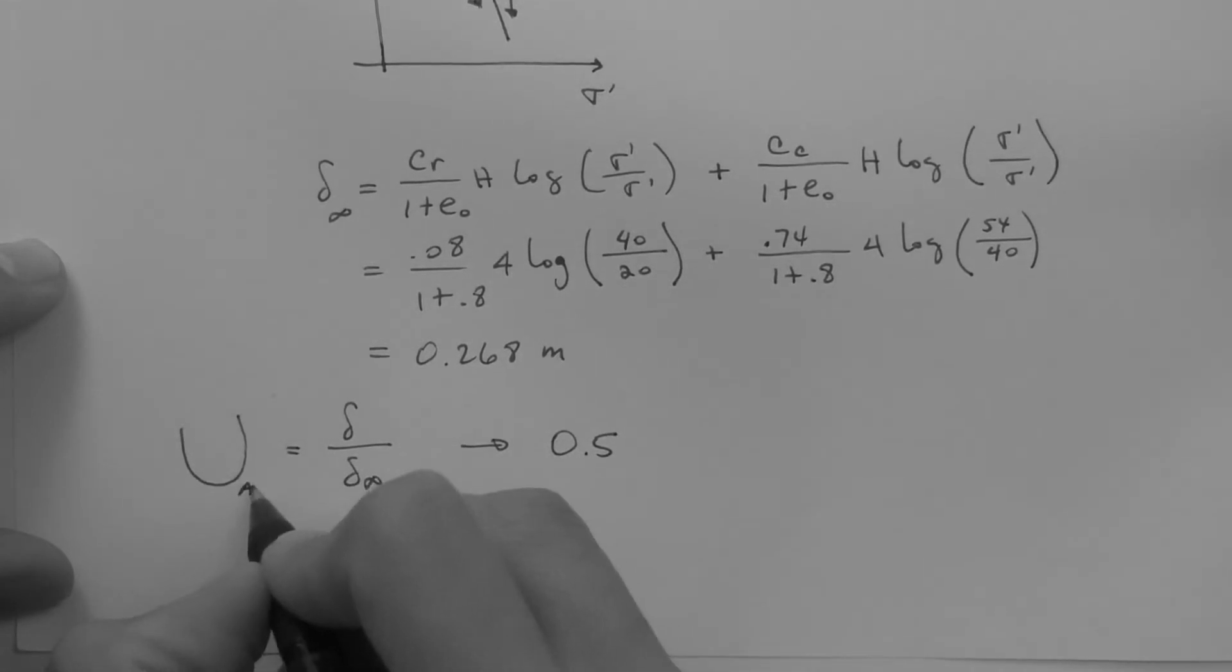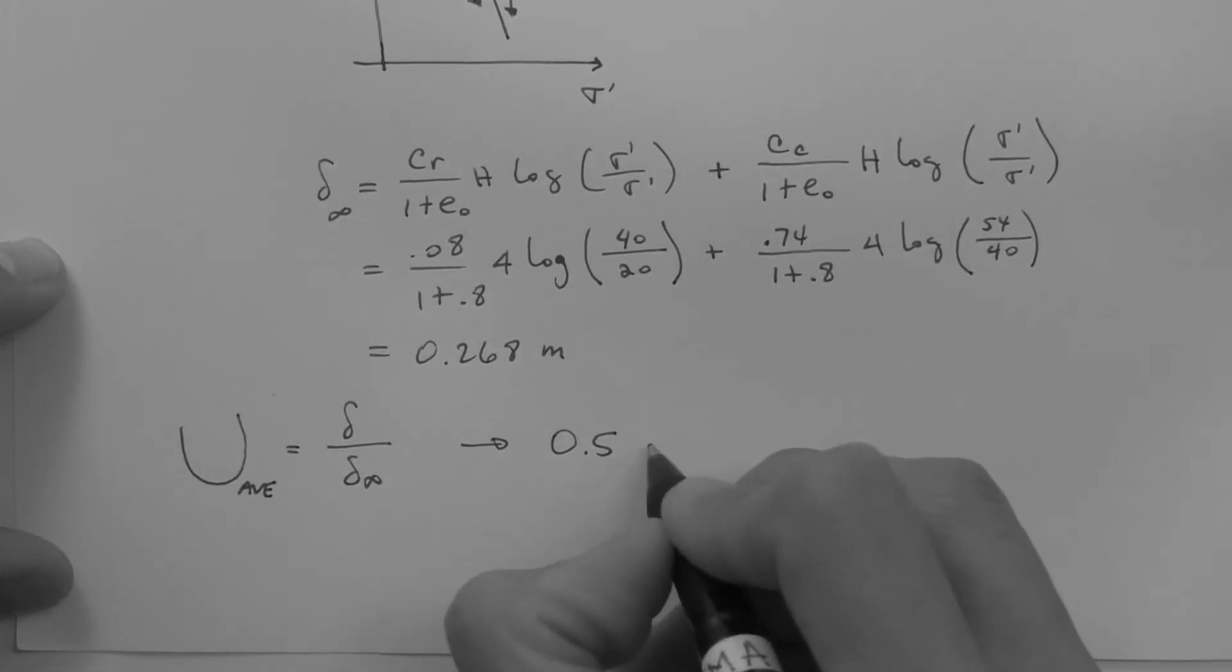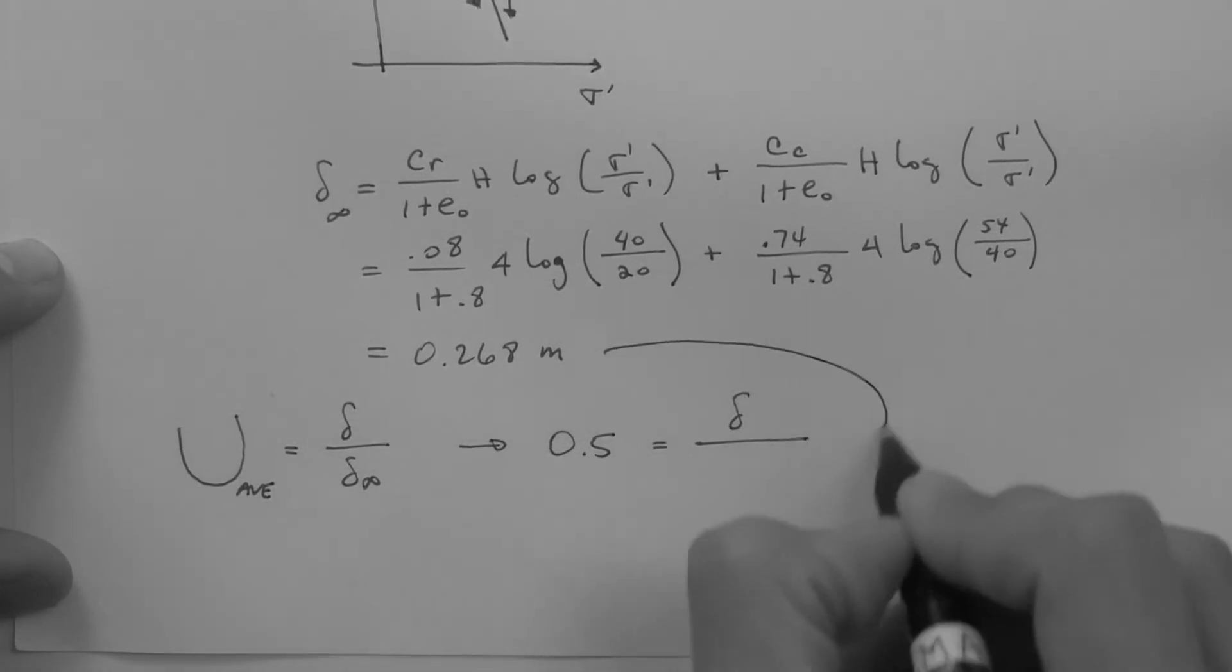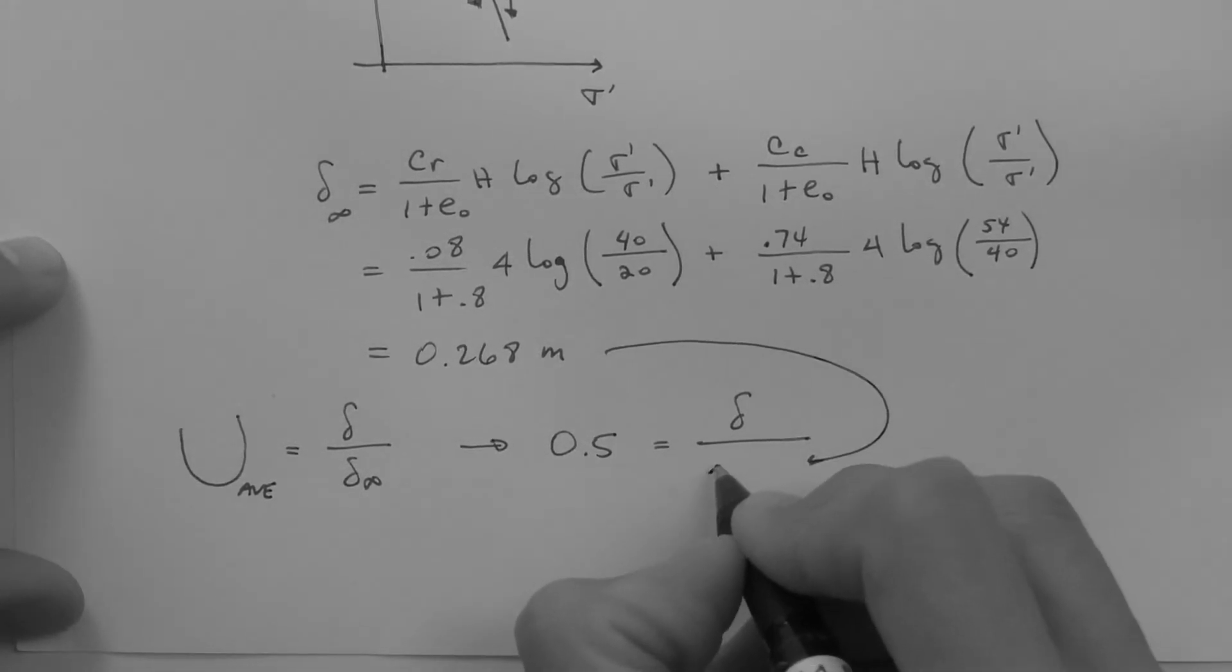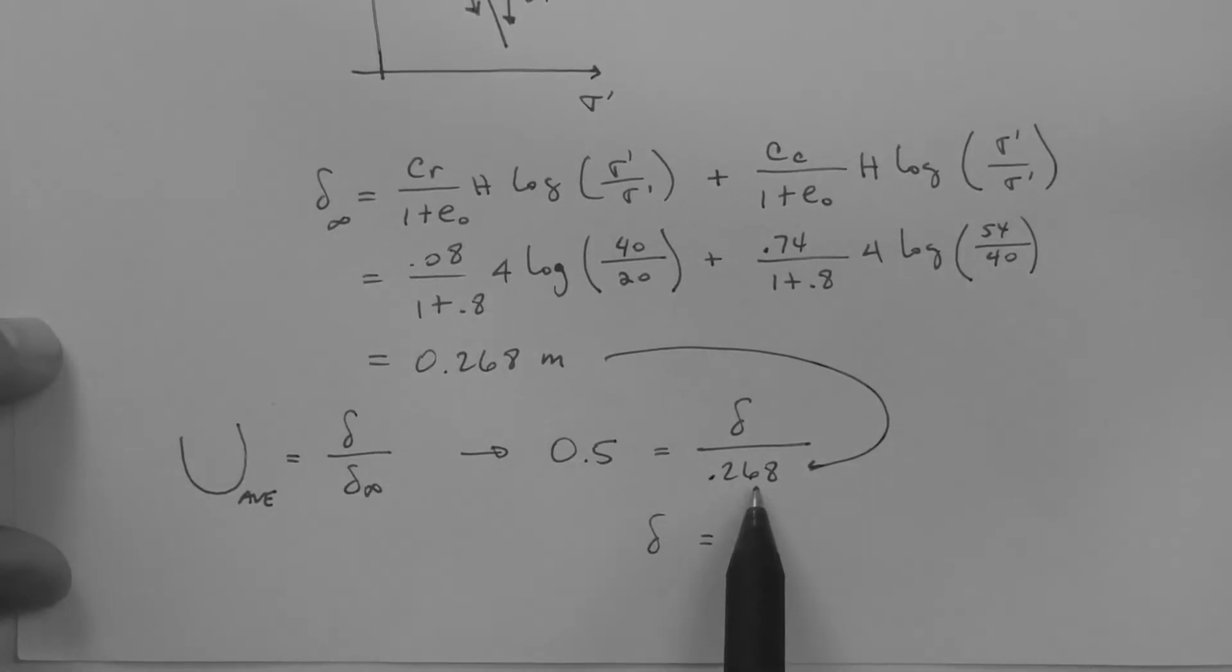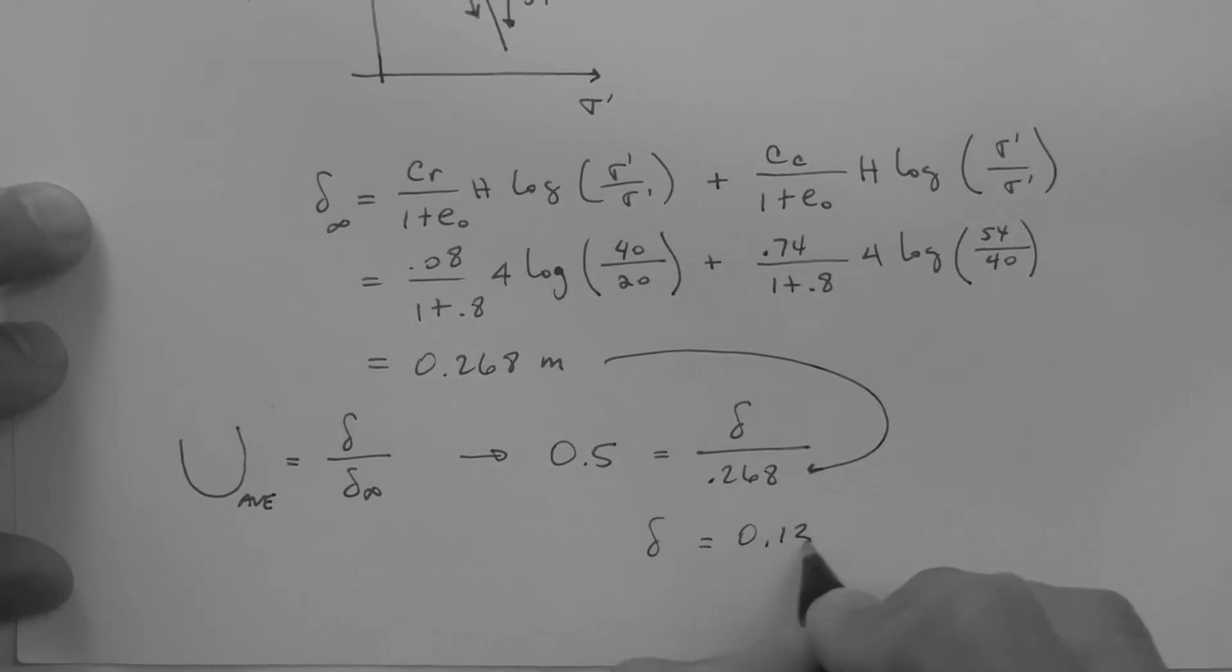So if our degree of consolidation is 0.5, average degree of consolidation, and we're looking for this settlement knowing this one, then we can simply solve for that settlement, which is half of that, 0.134 meters.